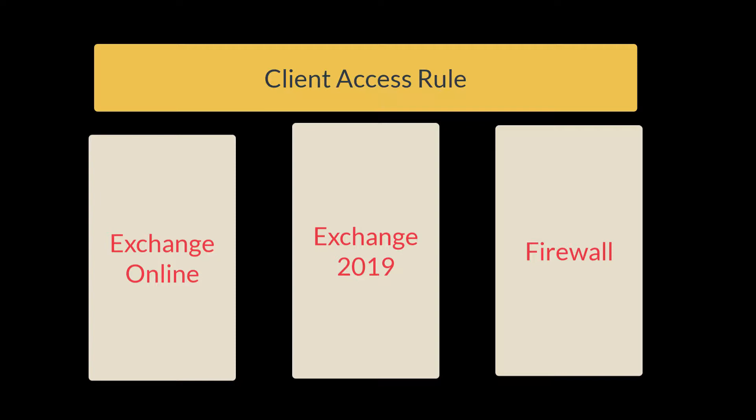Here's an example: let's say your tenant is US-based and your firm is only US-based, and your employees are also US-based. Then your manager, the CEO of the company, would say they just want to allow employees who are located or based in the US to be able to access Exchange ActiveSync and Exchange Web Services.